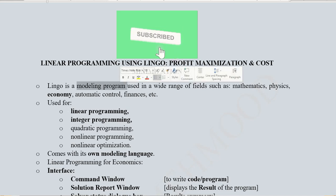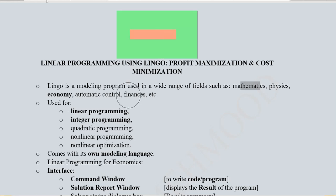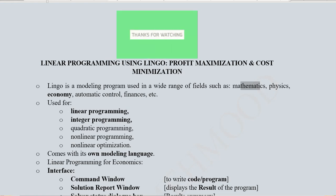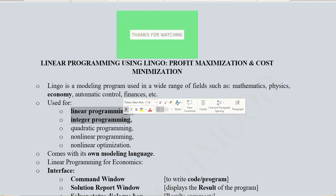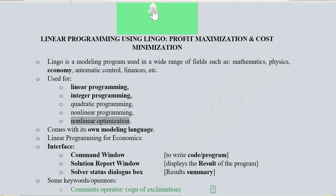LINGO is a modeling program in which we make models using programming tools. It has wide applicability in fields like mathematics, physics, automatic control, financing, and most importantly economics — because here we are going to take two examples from economic situations. It can help us solve problems relating to linear programming, integer programming, quadratic programming, nonlinear programming, and nonlinear optimization.